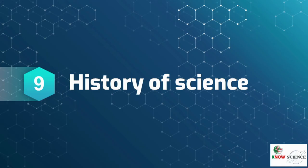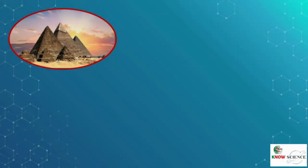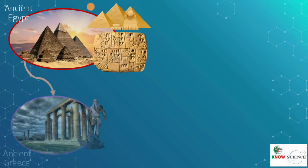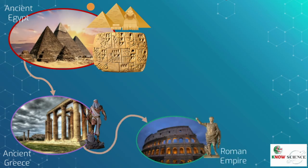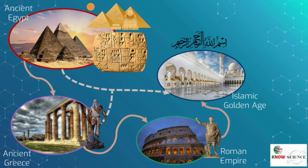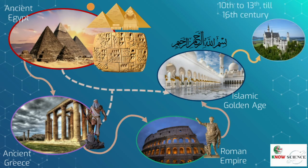Science in a broad sense existed before the modern era and in many historical civilizations. The early origins of science can be traced back to ancient Egypt and Mesopotamia around 3,500 to 3,000 years ago. Their contributions to mathematics, astronomy, and medicine influenced the Greek natural philosophy of classical antiquity. After the fall of the Western Roman Empire, knowledge of Greek conceptions of the world was preserved in the Muslim world during the Islamic Golden Age.